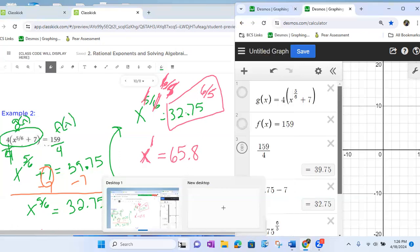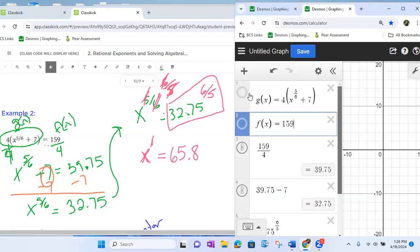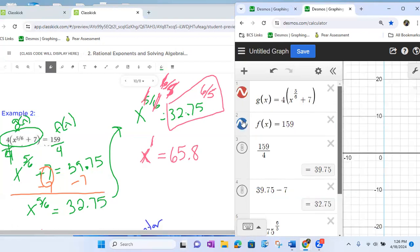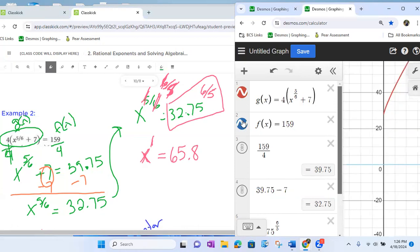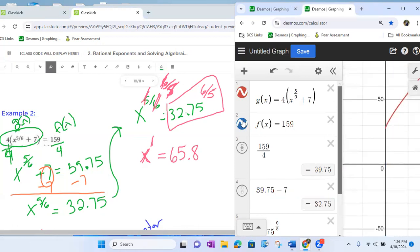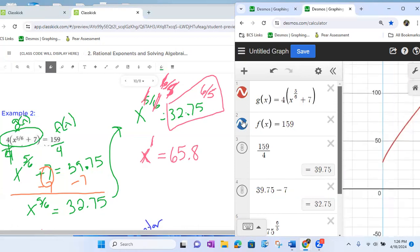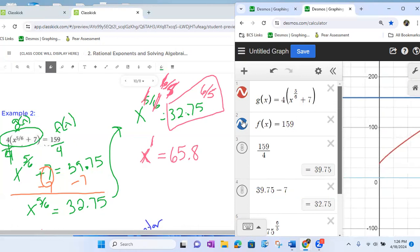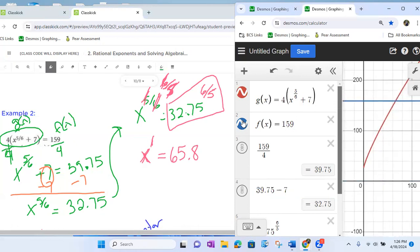You'll notice that over here in Desmos. And then what I'm going to do is I'm going to type them in, which are already in there. I'm going to graph them. And I'm going to look for where they intersect in this case. So I'm looking for 159. There's that 159 line. There is our g of x red line. We're going to look for where they intersect.